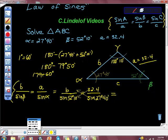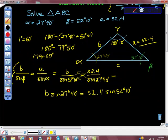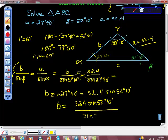We'll have B times sine of 27 degrees, 40 minutes, equals 32.4 times sine of 52 degrees, 10 minutes. Then I'm going to divide both sides by sine of 27 degrees, 40 minutes. So B equals 32.4 sine of 52 degrees, 10 minutes, all over sine of 27 degrees, 40 minutes.